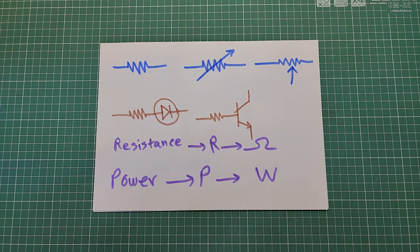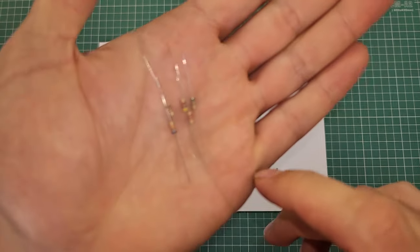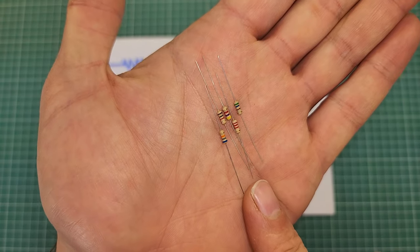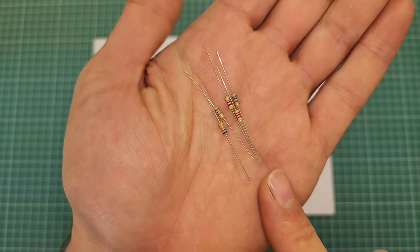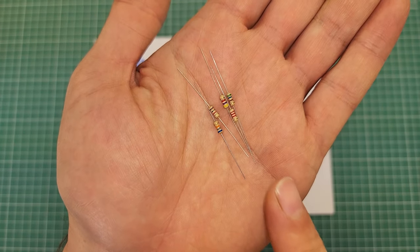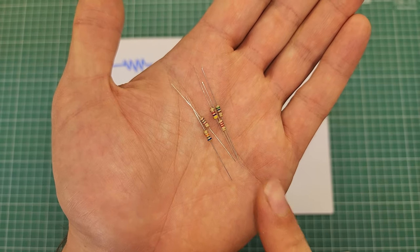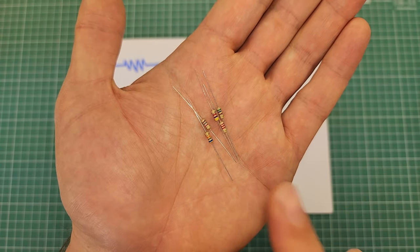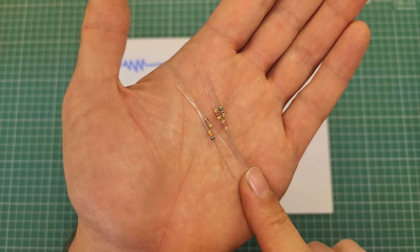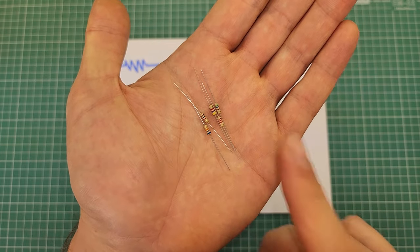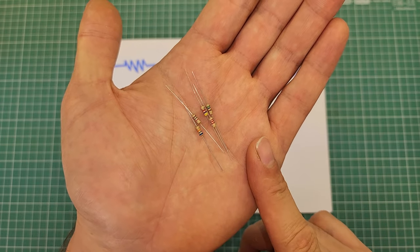If you are about to buy a resistor, you have to ask the vendor for the exact resistance and power. These are resistors and each of them has a specific resistance value determined by the colored bands. You can also use a multimeter to find the resistance value, but the power of all of them is equal to a quarter watt.